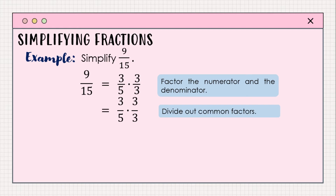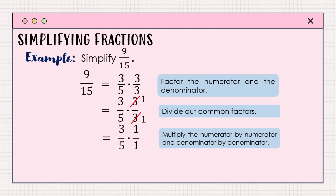When we divide common factors, we are actually using a shortcut method known as cancellation. Cancellation is a method of dividing a factor in the numerator by the same factor in the denominator. For this example, we cancel out the 3 in the numerator and the denominator, then multiply the remaining factors. So 3/5 multiplied by 1/1 equals 3 fifths. The simplified form of 9 over 15 is 3 fifths — that is how we reduce a fraction to its lowest term.